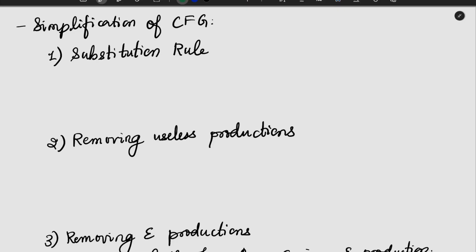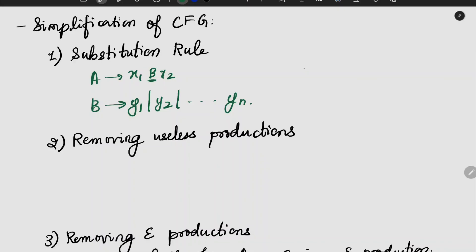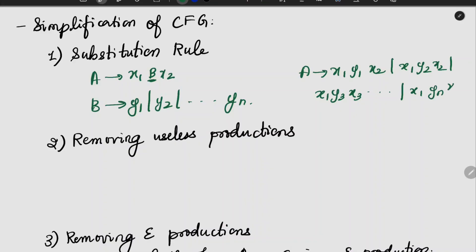In the substitution method, if we have a production A gives x1 B x2, and there is a production B gives y1, y2, up to yn, then we can substitute B. That is, A gives x1 y1 x2, x1 y2 x2, x1 y3 x2, and so on up to x1 yn x2. This technique is the substitution rule and it is very important.